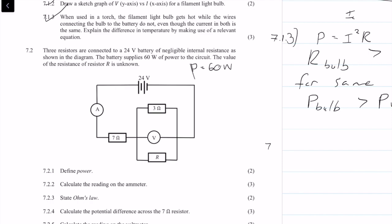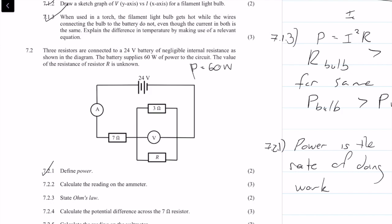Question 7.2.1 is a definition. Power is the rate of doing work, and we get two marks for that.